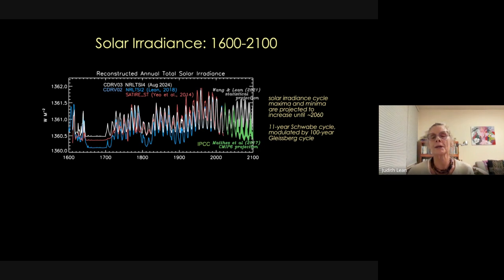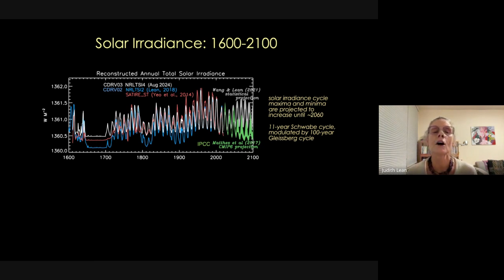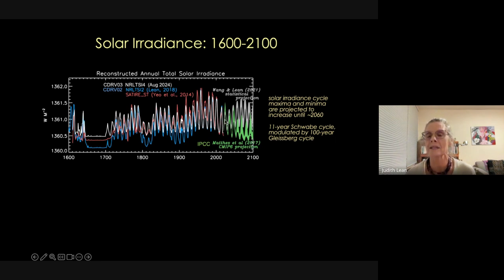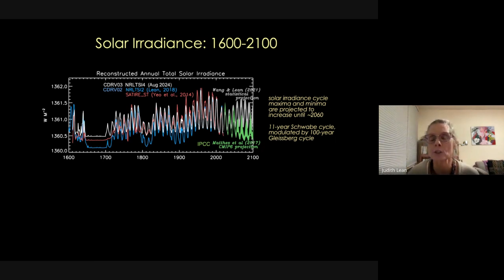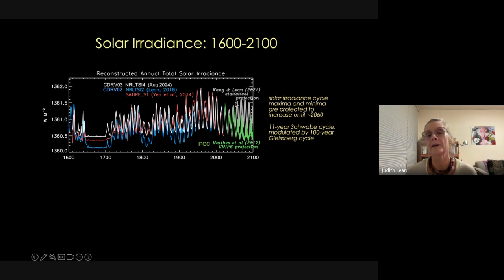Other estimates of irradiance change from the Maunder Minimum are shown in pink and blue. The green curve is the IPCC 2017 estimate based on claims that the sun is going into a Maunder Minimum. Our predictions in gray show the sun is not going into a Maunder Minimum — rather, we're heading for another Gleissberg cycle, probably of comparable magnitude to the past Gleissberg cycle.